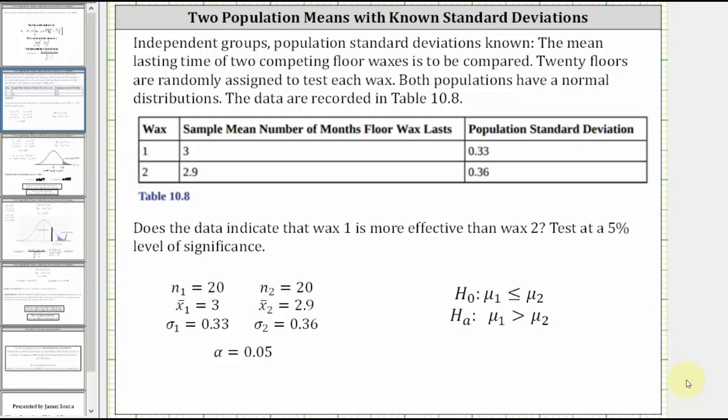Welcome to an example of a hypothesis test of two population means with known population standard deviations. Because we have known population standard deviations, the test statistic is a z-score and we perform a two-sample z-test, not a two-sample t-test. Now let's take a look at our example.